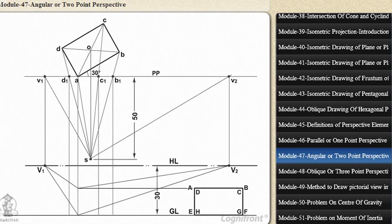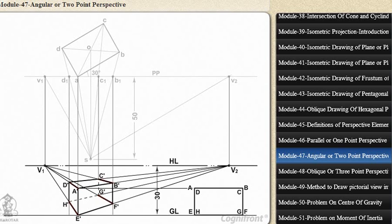Perspectives of edges AD, EH, BC, and FG will converge to V1, and those of edges AB, CD, EF, and GH will converge to V2. Perspectives of vertical edges AE, BF, CG, and DH will remain vertical.